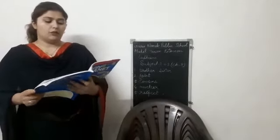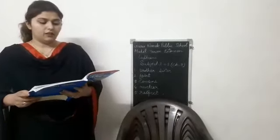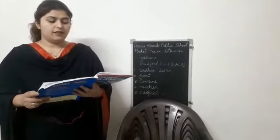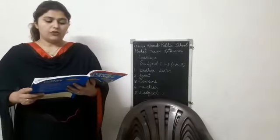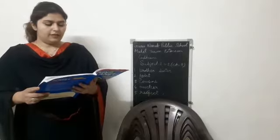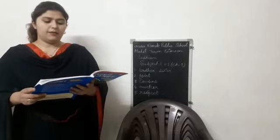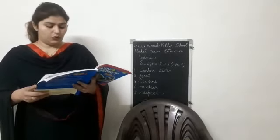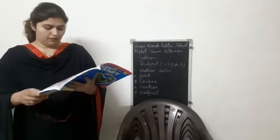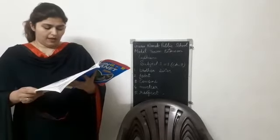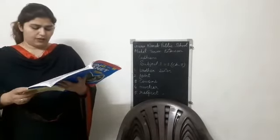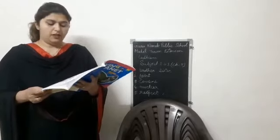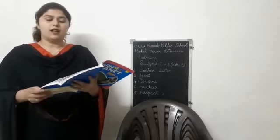So put your finger on the very first line. Children should always respect their elders. Family members should help each other. Now students, points to be remembered. Number 1 is: a family lives together in a house.